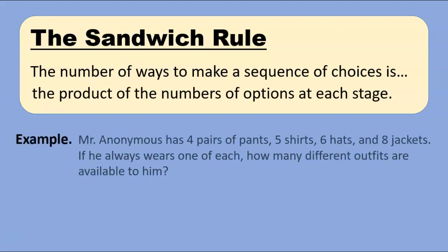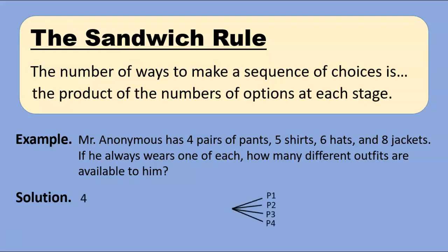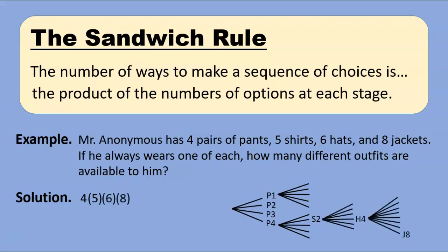For example, Mr. Anonymous has four pairs of pants, five shirts, six hats, and eight jackets. If he always wears one of each — and we'll assume he does not care about them actually matching — how many different outfits are available to him? We just appeal to the sandwich rule. He has four options for pants, each leading to five options for shirt, then six for hat, and eight for jacket. Multiplying these, he has a total of 960 outfits.